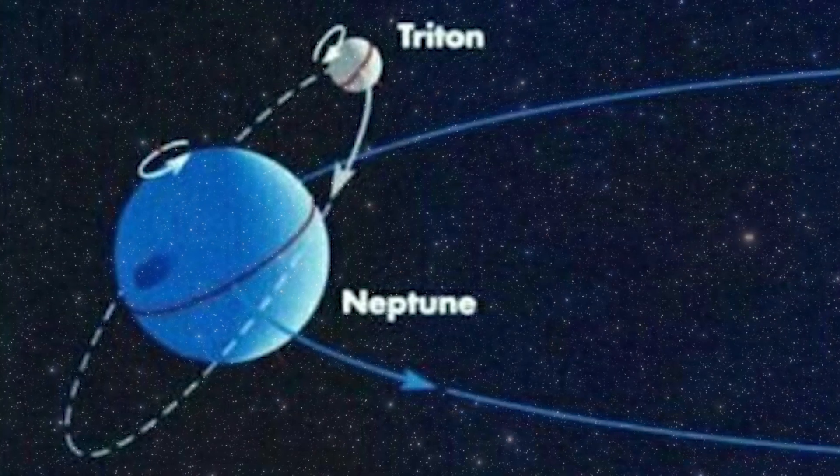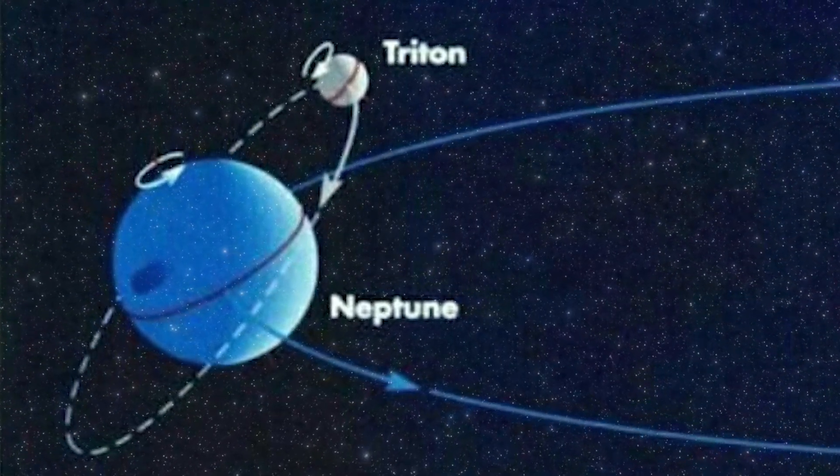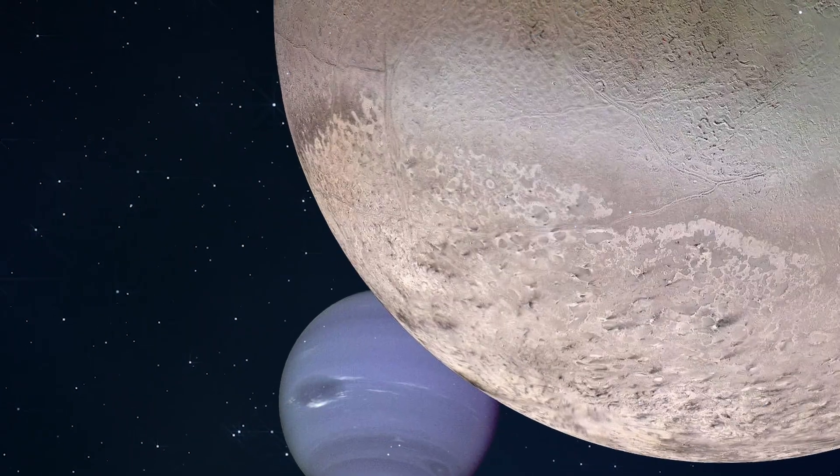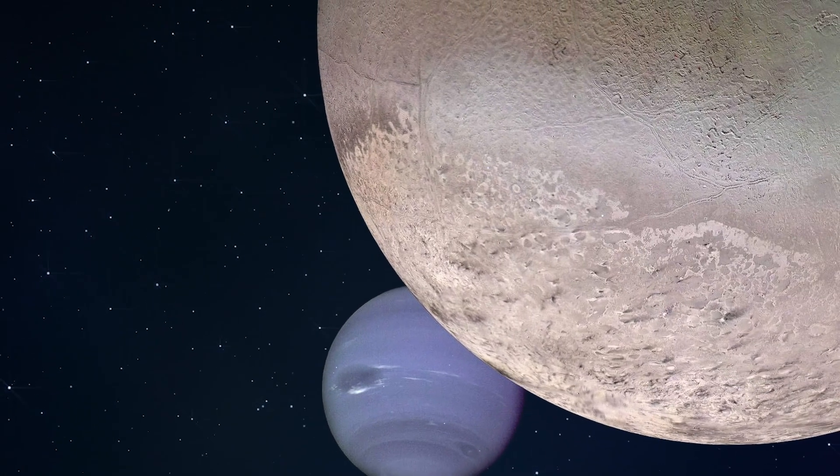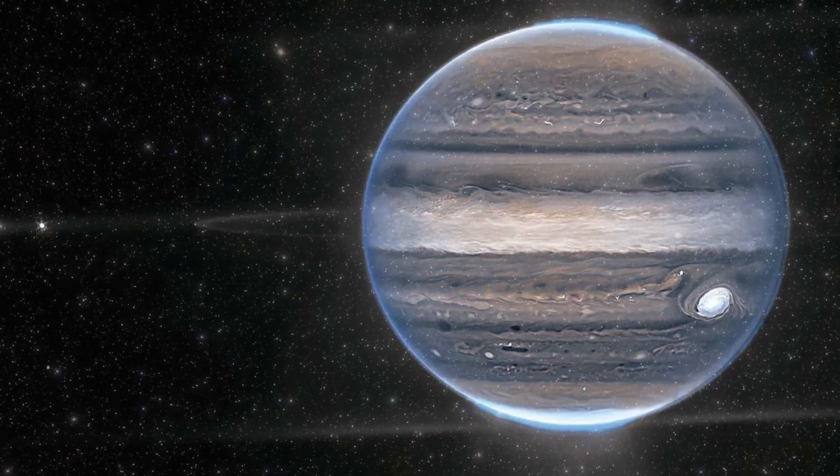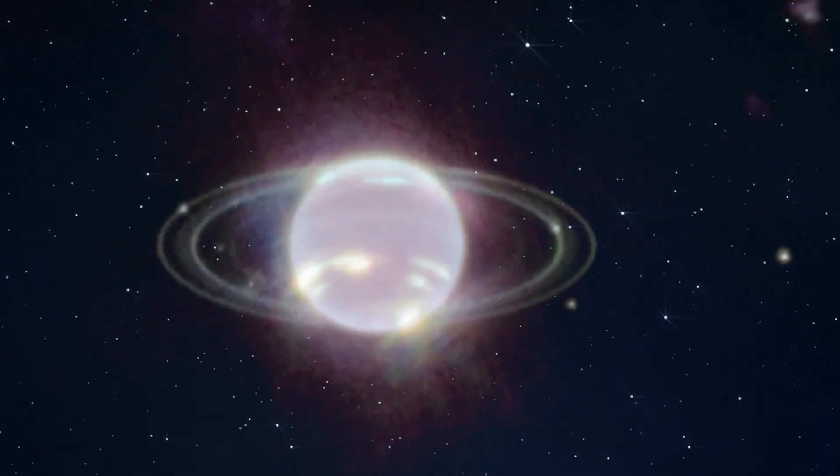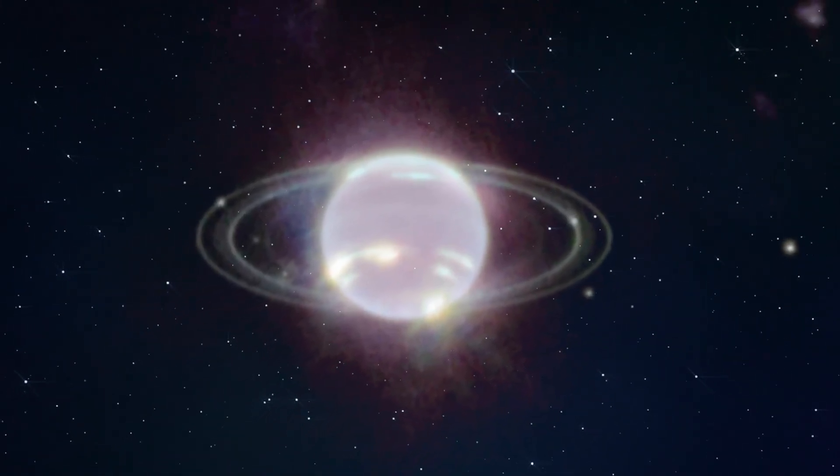However, the most intriguing sight in Webb's image is Triton, the most distant and luminous satellite. In the photo, Triton shines like a brilliant star, even outshining Neptune itself. This peculiar glow arises from Triton's nitrogen ice-covered surface, reflecting approximately 70% of the sunlight it receives.